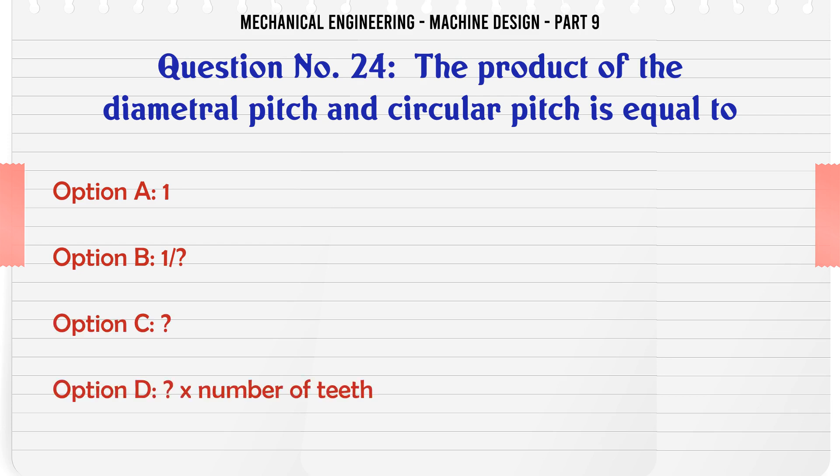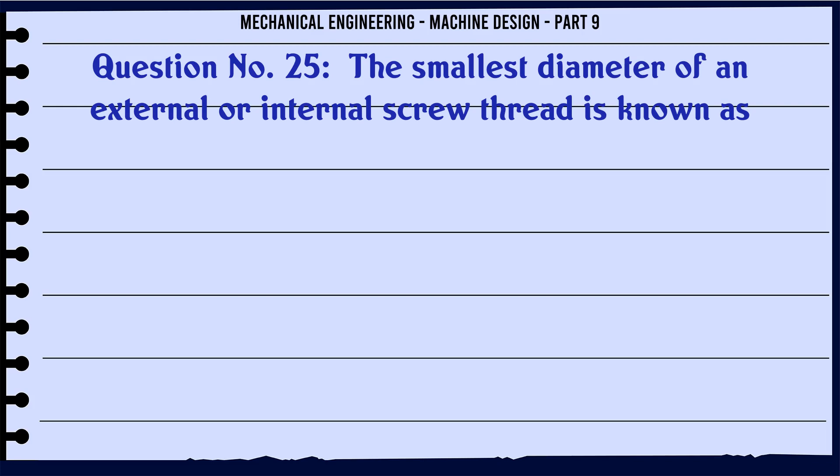The product of the diametral pitch and circular pitch is equal to: A. 1, B. π, C. π², D. Number of teeth. The correct answer is π.